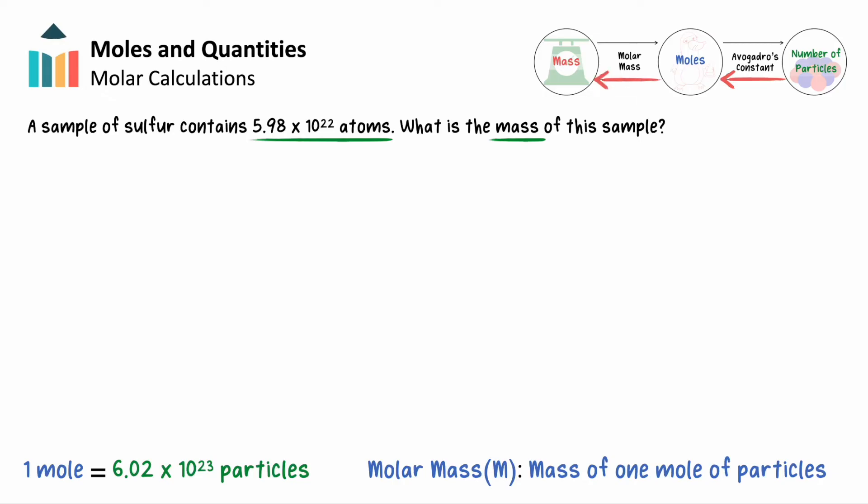To relate atoms to moles, we'll use Avogadro's constant, where 1 mole of sulfur equals 6.02 times 10 to the 23rd sulfur atoms. We'll divide the atoms of sulfur in the sample by this ratio to find the moles of sulfur.